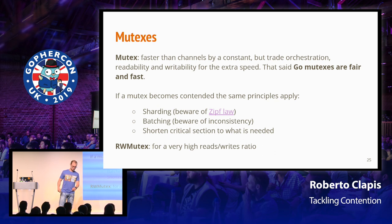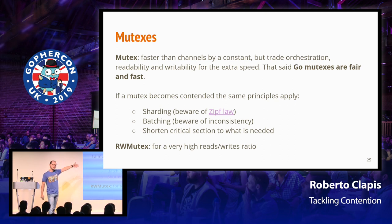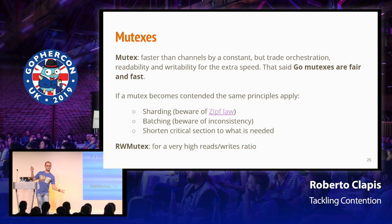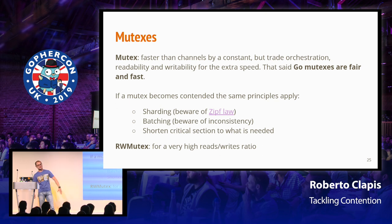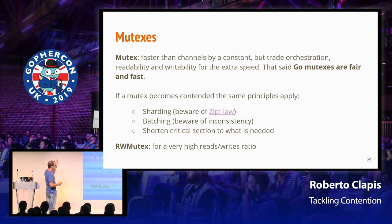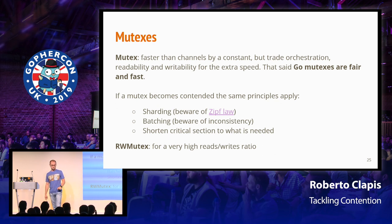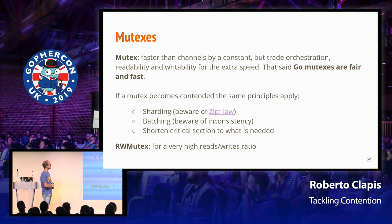Then you measure and find out nothing changed. Why? Because your dictionary is being used by a Java indexer for packages, and all Java packages start with 'com.' So you did a lot of work for nothing. You should be aware that even if your data looks evenly distributed, the access patterns might not be. If you have a higher read-to-write ratio, you can use a read-write mutex. It's a bit more complicated and slower than a normal mutex, but if you have lots of reads and few writes, it's actually good and it's fair.